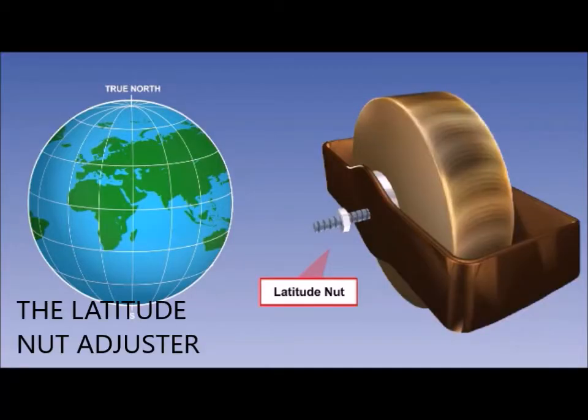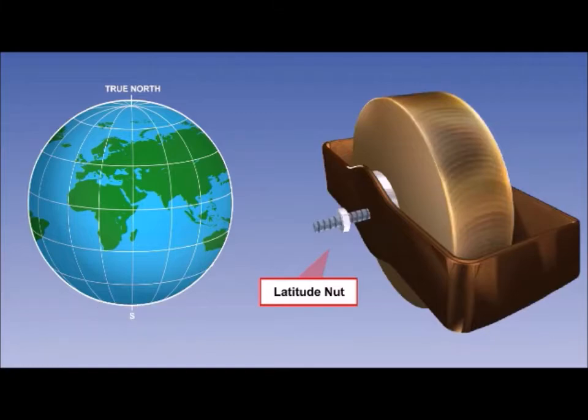In its simplest form, the latitude nut is an actual nut wound onto a thread on the spin axle of the gyro rotor, which we can see here.